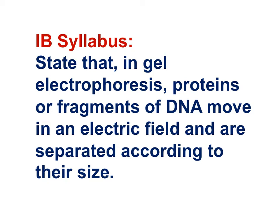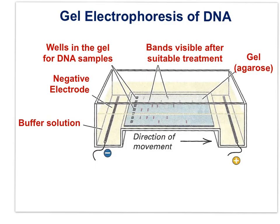Here is the first relevant IB syllabus statement for this movie: In gel electrophoresis, proteins or fragments of DNA move in an electric field and are separated according to their size. DNA cut with a restriction enzyme creates fragments, and the fragments are placed into the wells of a gel. The gel is composed of agarose or polyacrylamide, depending on whether we're working with DNA or proteins, respectively. The fragments of DNA move toward the positive electrode and separate according to their size. Small fragments move the furthest in the gel.